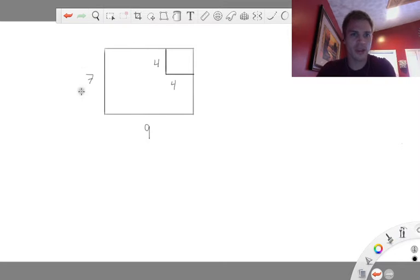Okay, so we have a rectangle, 7 wide by 9 long, and then we cut out here a square, which is 4 by 4.